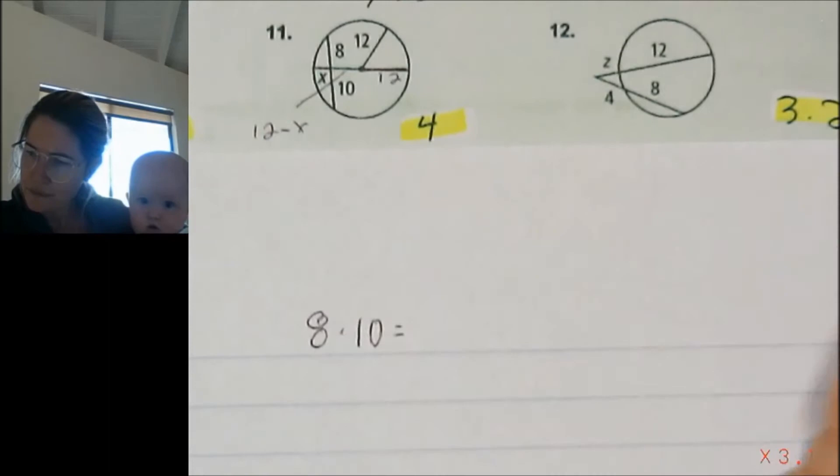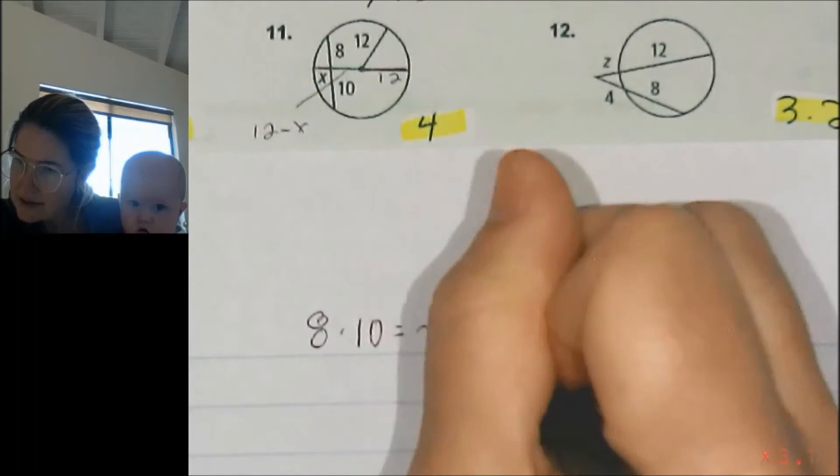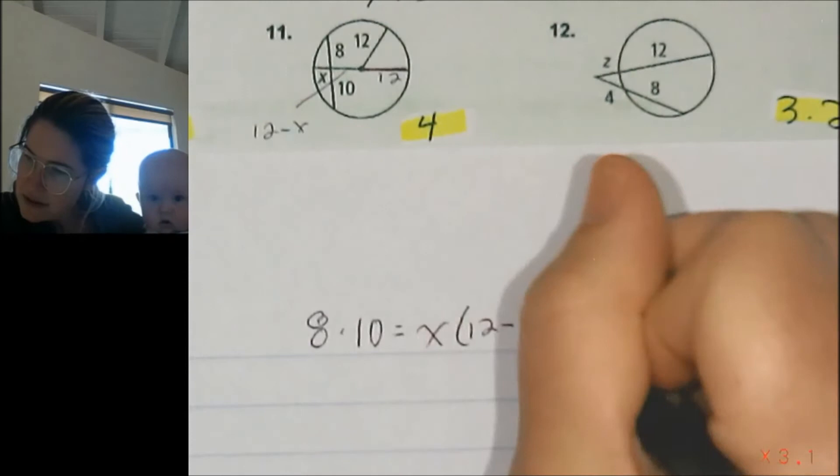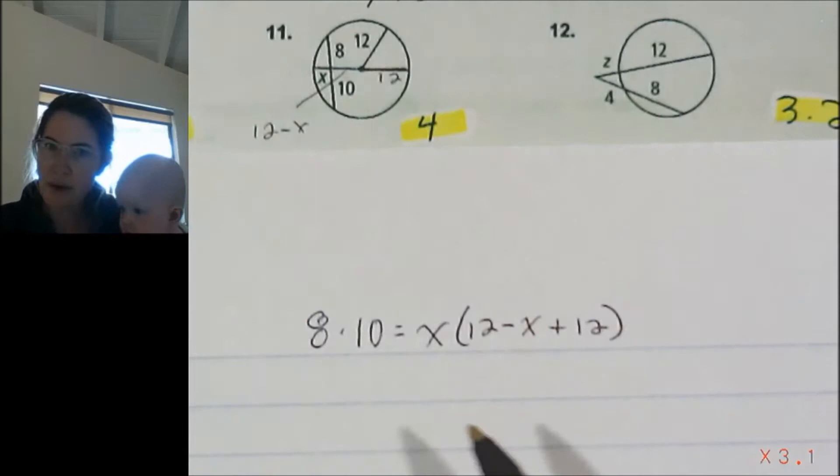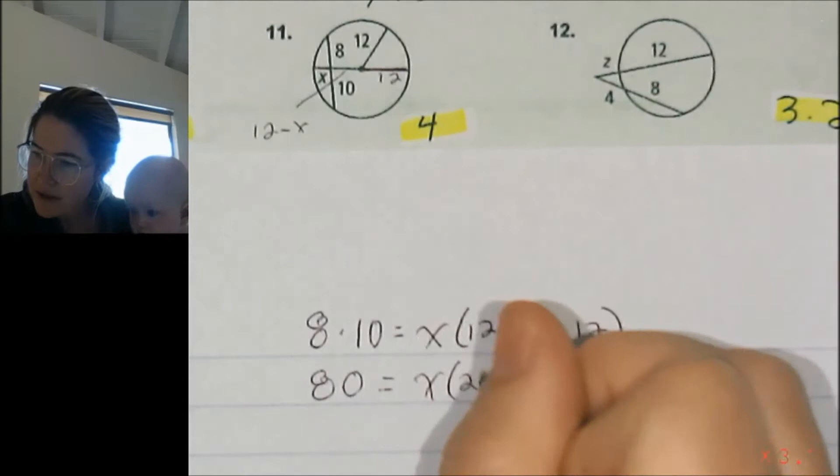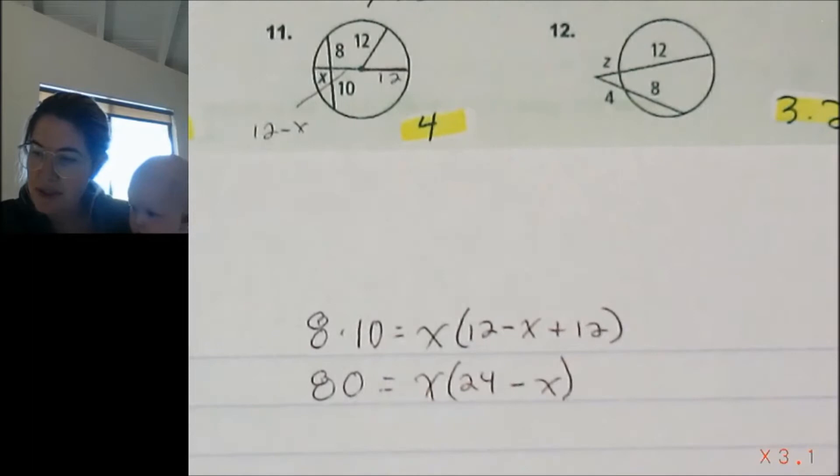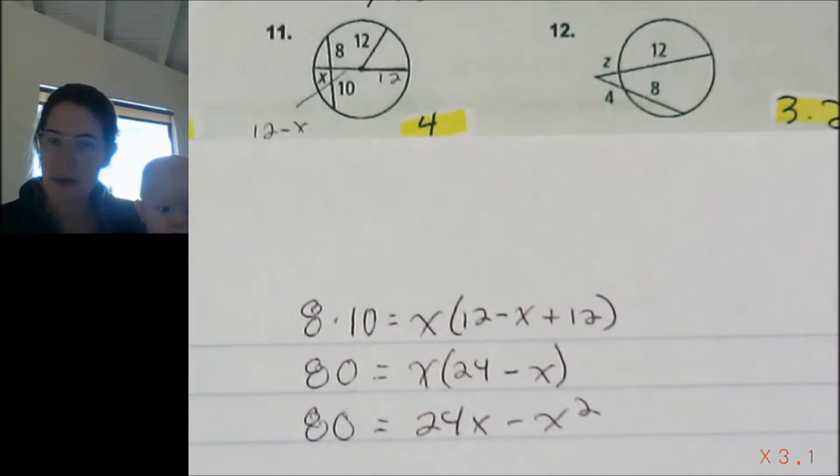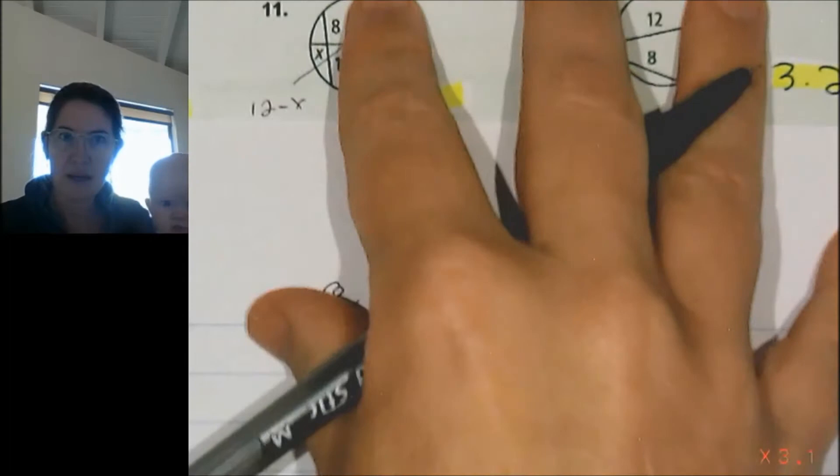All right, so 8 times 10 should equal these little parts multiplied together. So x times this little chunk, and then this chunk is 12 minus x plus 12. So we're going to multiply. That's 80. And then this guy, I'm going to combine what's in the parentheses first. So that's going to be 24 minus x because I have 12 and 12. And then I'm just going to distribute that x. So I'm going to get 80 is equal to 24x minus x squared.